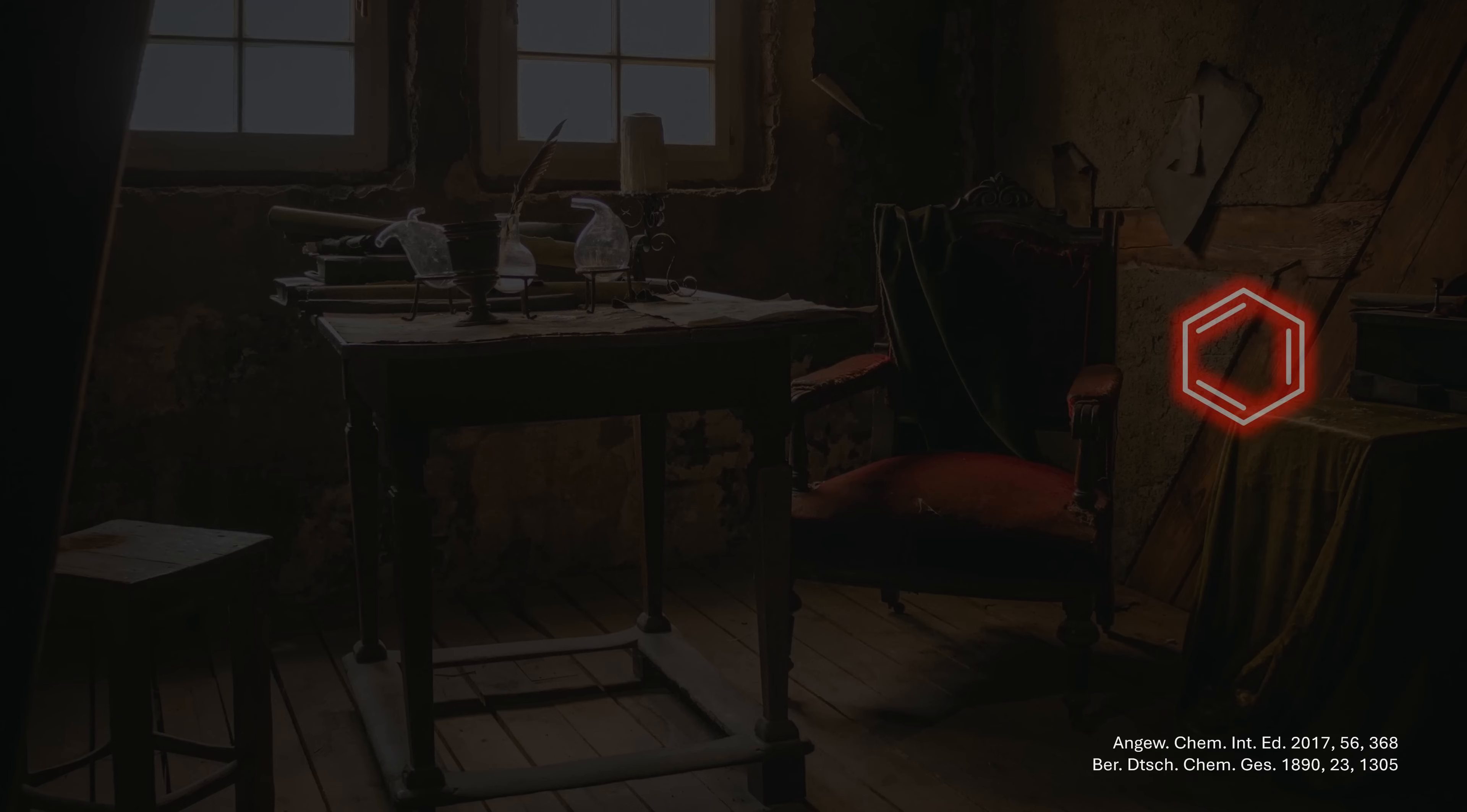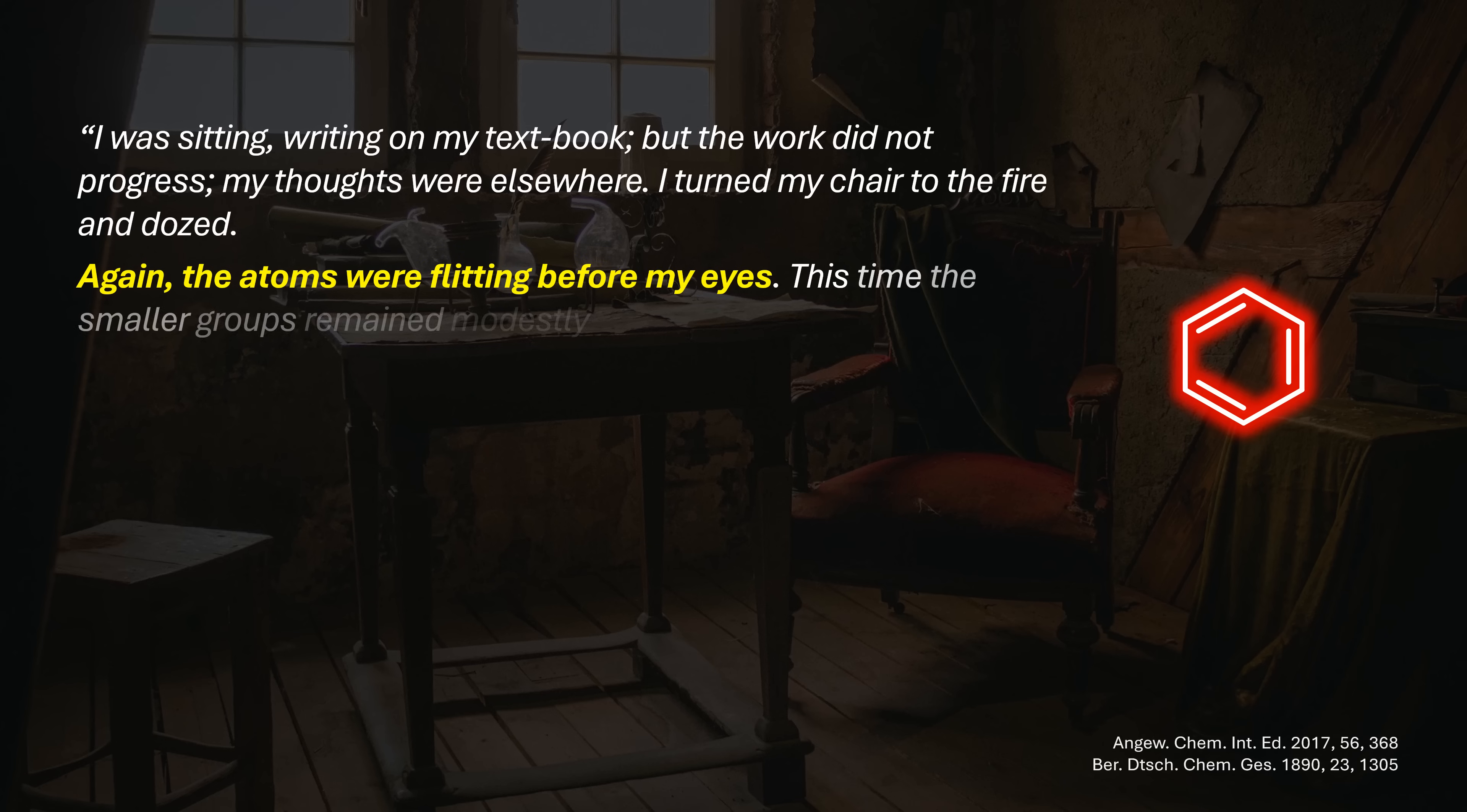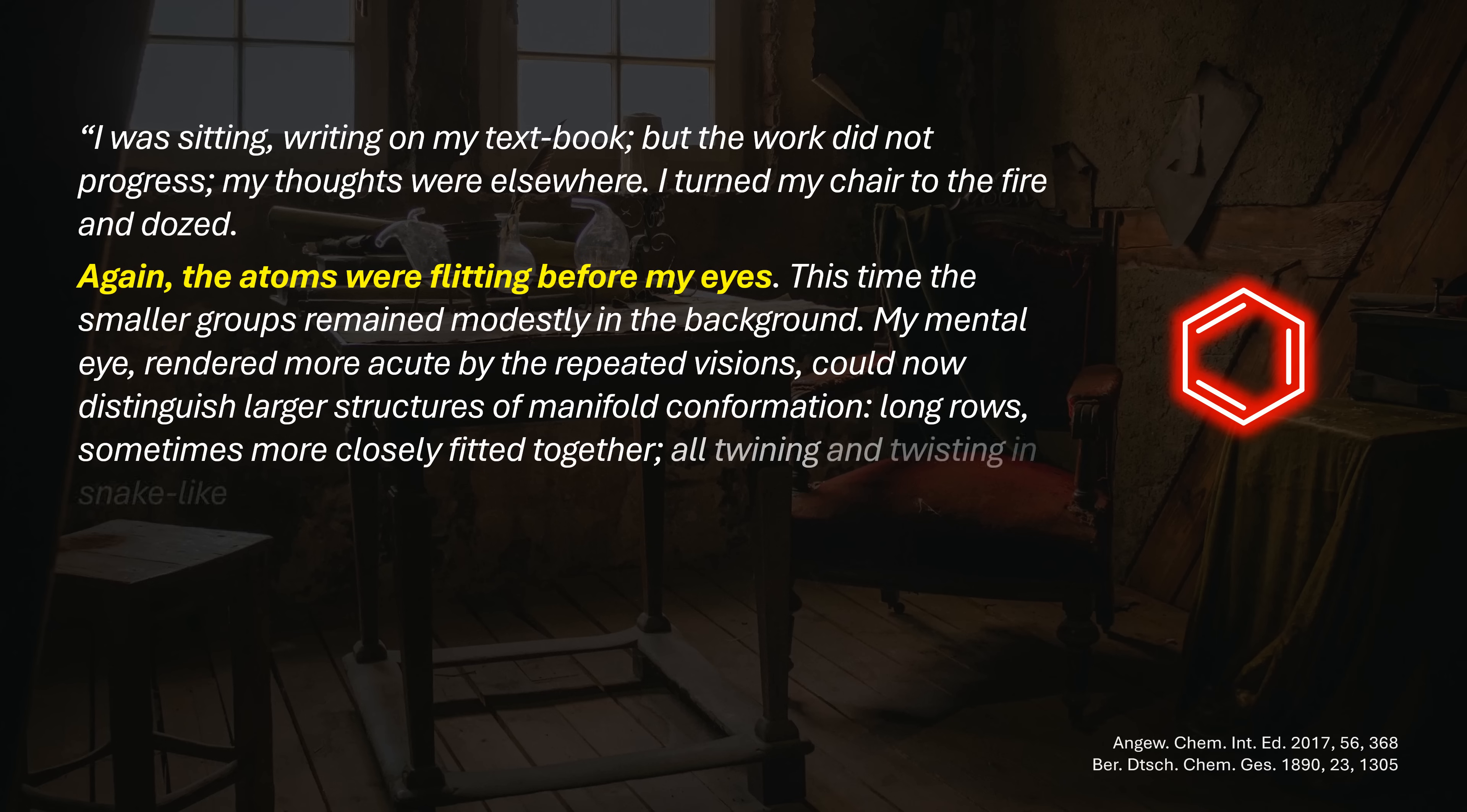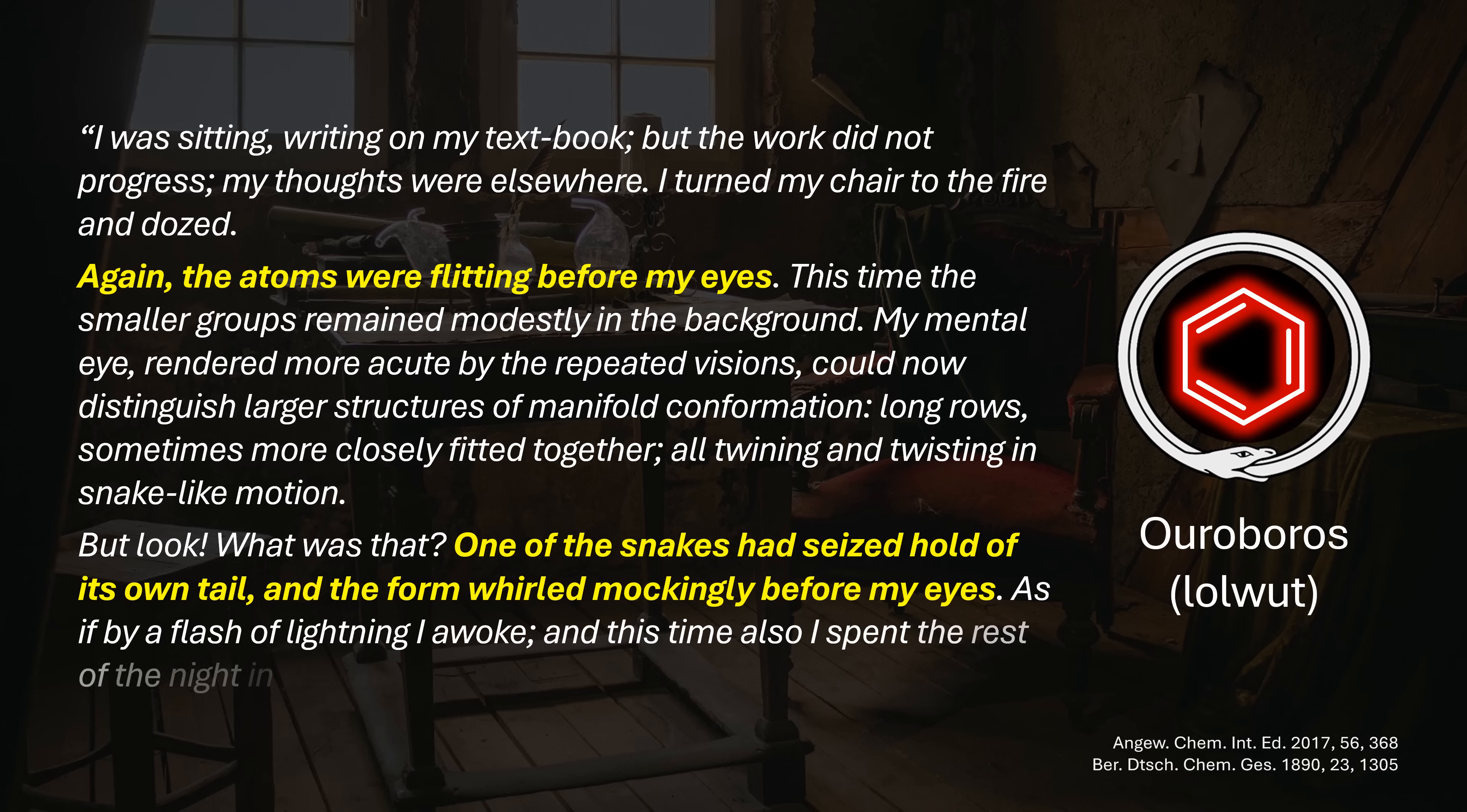These early days of chemistry were quite crazy because modern analytical methods did not exist yet. More often than not, chemists did not know the structures of the molecules they were toying around with. A prime example was the molecule benzene, for which Kekulé famously suggested the correct structure with alternating single and double bonds back in 1865. You might remember he claimed to have received the inspiration during a dream reminiscent of the Uroboros, the snake that eats its own tail. I told you, these days were crazy.